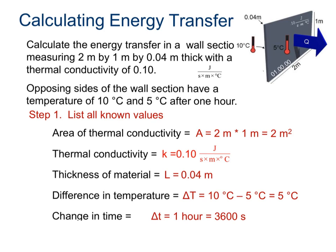So we're going to list all of our knowns. We've got the area as 2 meters squared. We've got the thermal conductivity that was given in the problem. We've got our thickness of material, which is 0.04 meters. Notice all of these are in meters. Some of your practice problems will not be, so you're going to need to remember to convert anything that doesn't match that k constant.